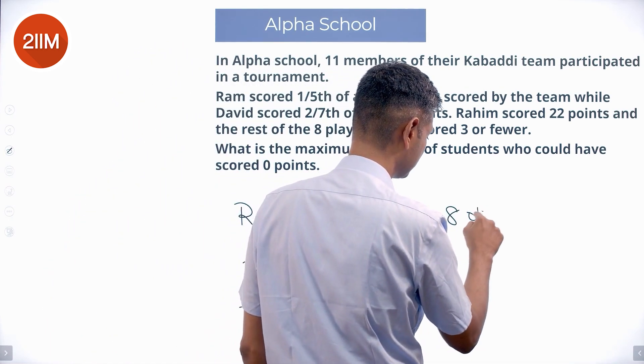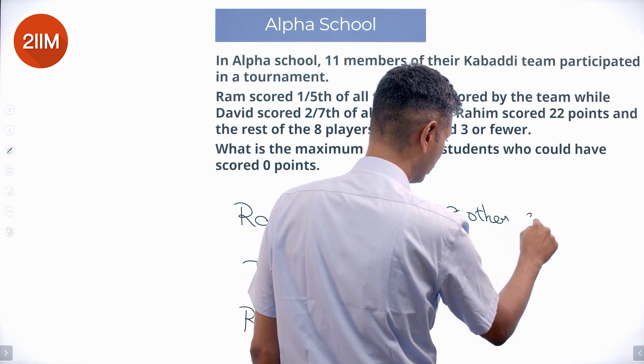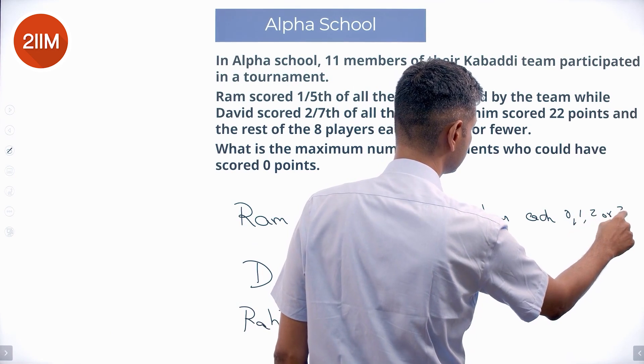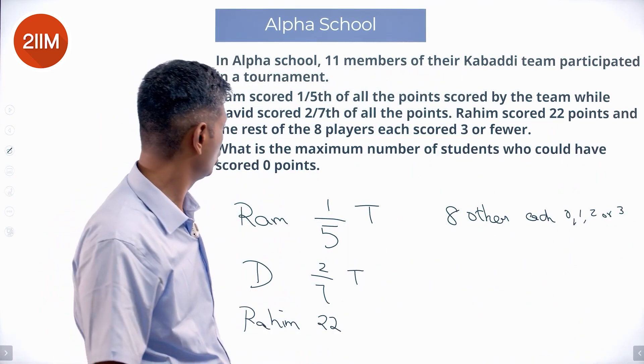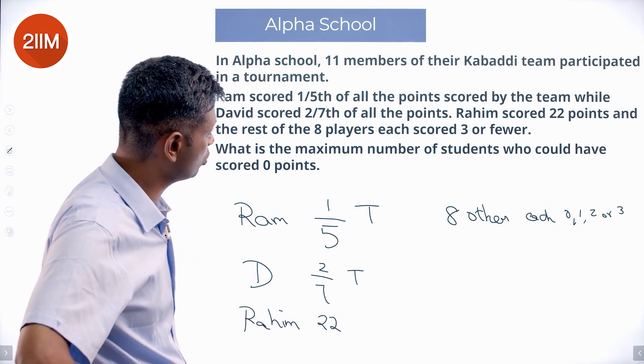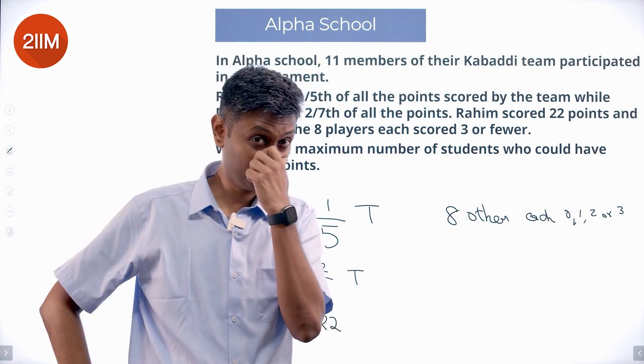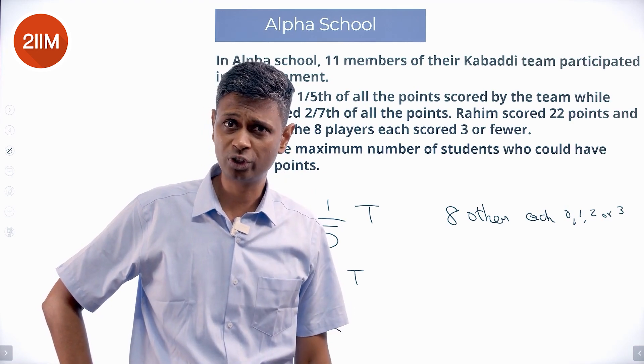Eight others, each of them 0, 1, 2 or 3, three or fewer. What are the maximum number of students who could have scored zero points?